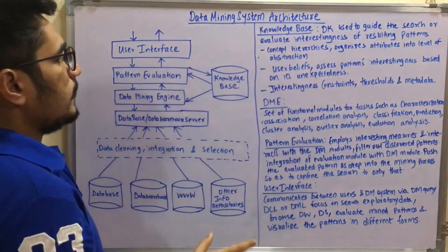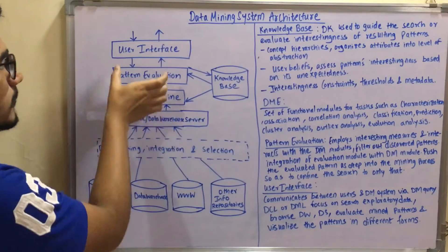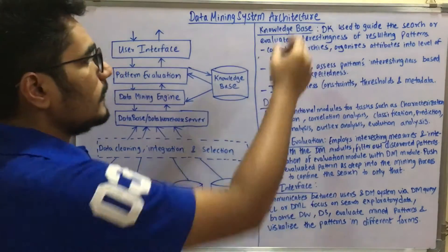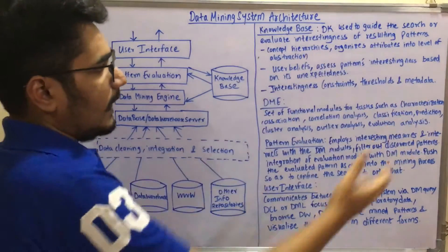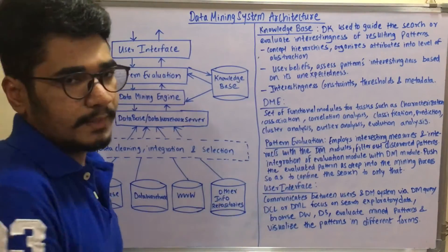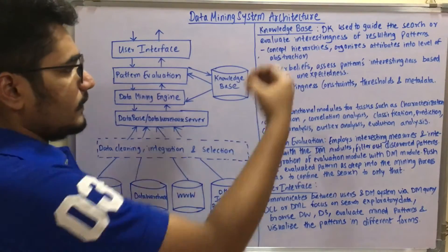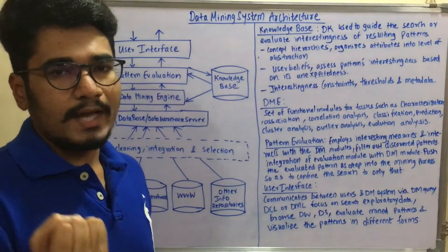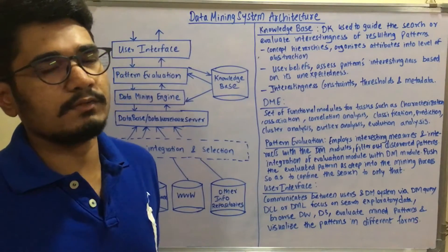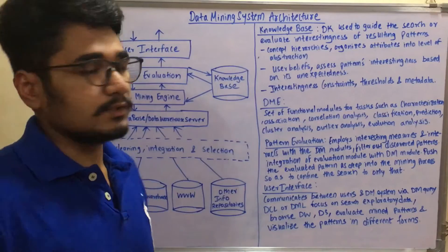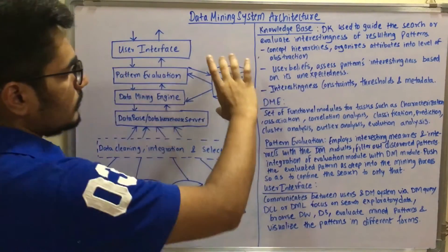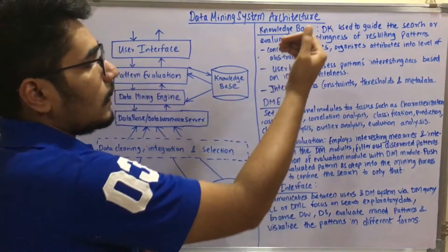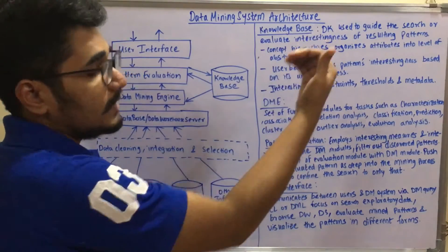The main components are: the knowledge base, the data mining engine, the pattern evaluation module, and the user interface. DK stands for domain knowledge, which is used to guide the search or evaluate the interestingness of resulting patterns — we extract different kinds of knowledge from the database based on different queries and motivations. The knowledge base consists of concept hierarchies, which organize different attributes into different levels of abstraction.